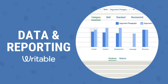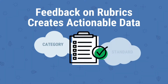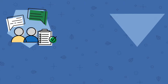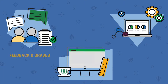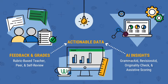Feedback is the key to actionable data and student improvement in Writable. All rubrics are tagged by category, skill, and standard, so when feedback is given or generated by our AI tools, it creates automatic data on student writing progress.